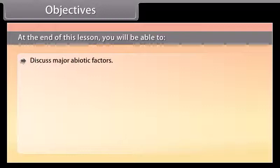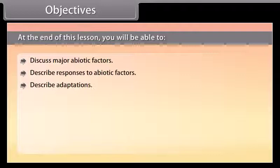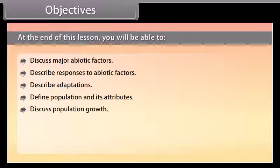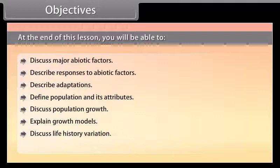Objectives: At the end of this lesson you'll be able to discuss major abiotic factors, describe responses to abiotic factors, describe adaptations, define population and its attributes, discuss population growth, explain growth models, discuss life history variation, and explain population interaction.